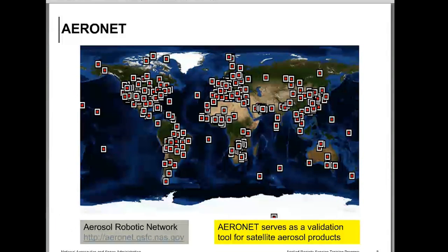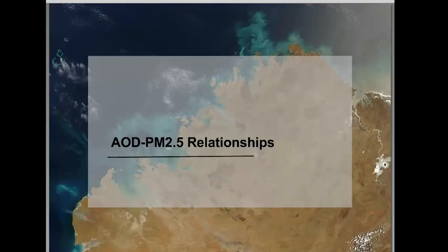NASA has a huge network of ground-based sun photometers which make continuous measurements of aerosol optical depth from more than 400 locations around the world. This network — called AERONET — is primarily designed to validate NASA satellite data products and provides the ground truth. The same quantity derived from the satellite is measured from these ground-based instruments, and we use these to check the quality and uncertainties of satellite products. This data is available free for anyone to download.